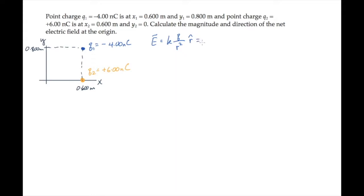It's useful to rewrite the r hat vector as the vector r divided by its magnitude, so that we get this result. The r vector from each charge to the origin equals minus x times x hat minus y times y hat, so that we end up with this expression.